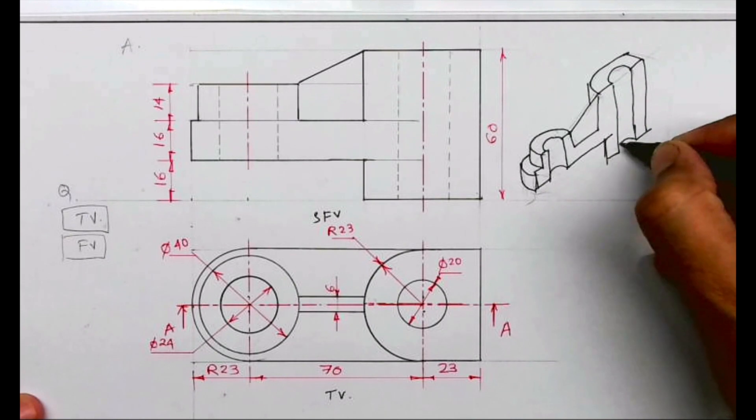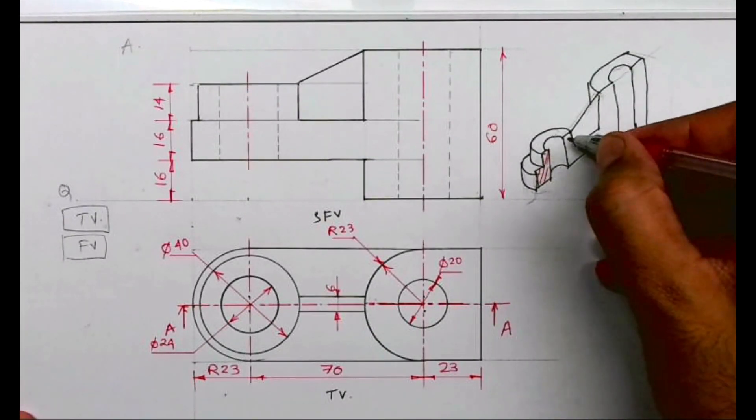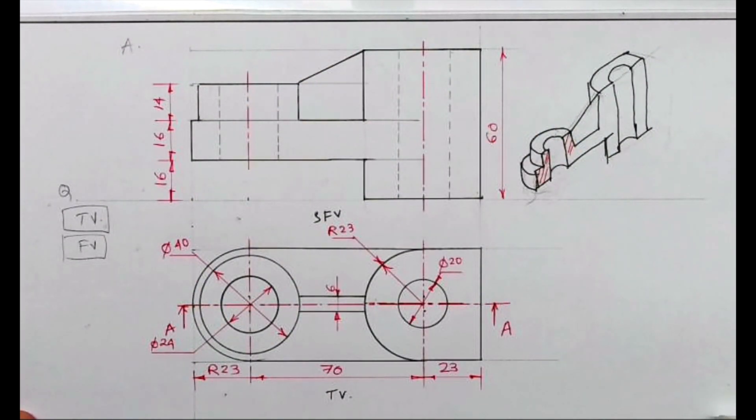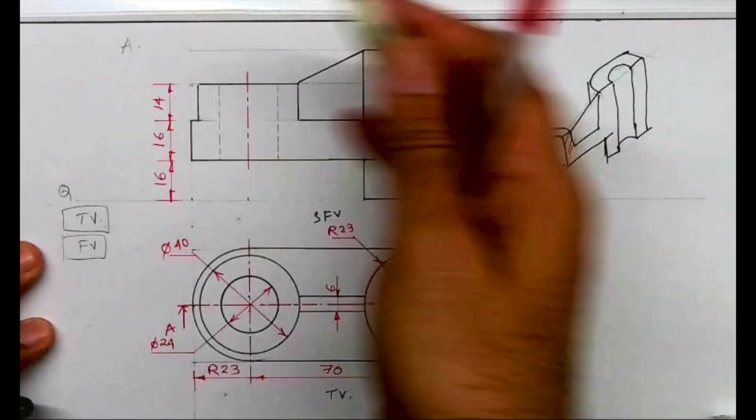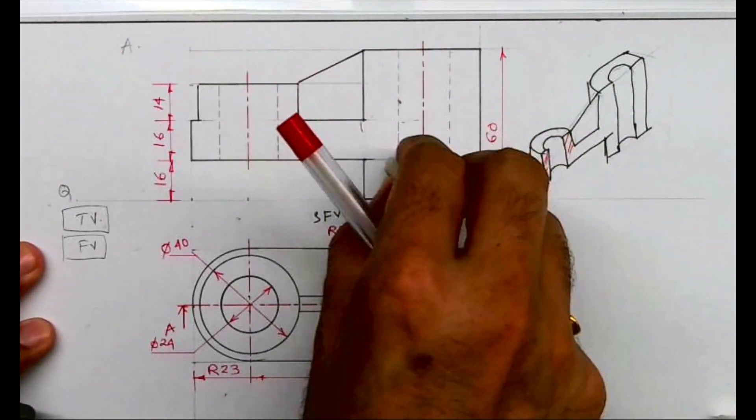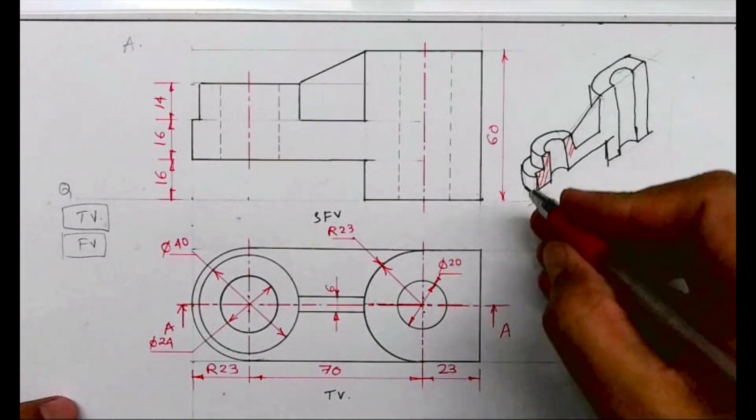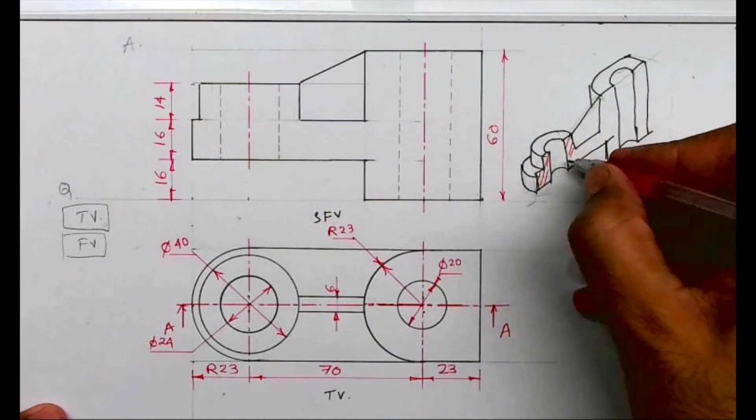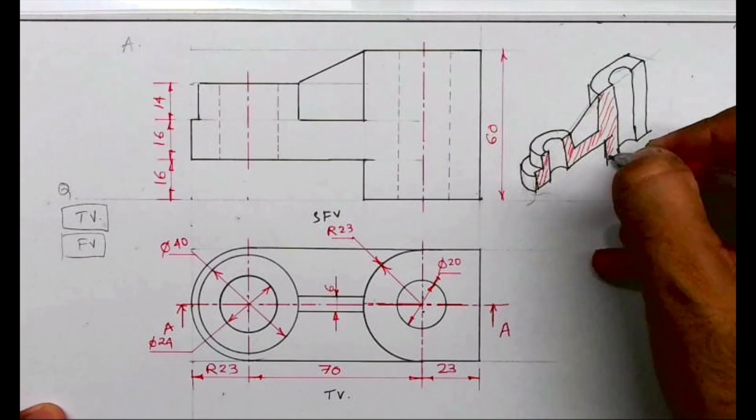This way, so this will be hatched, this will be hatched. See this, this part and this part will get hatched. This part will go away, so that's why I'm erasing it. This line will also go away. So this hatching will come. It won't come in this part, that will come in this part. We won't hatch in rib because it is getting cut parallel.